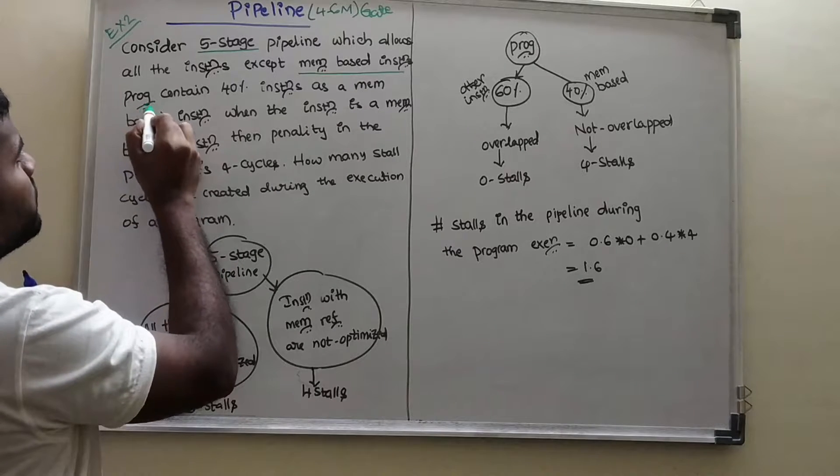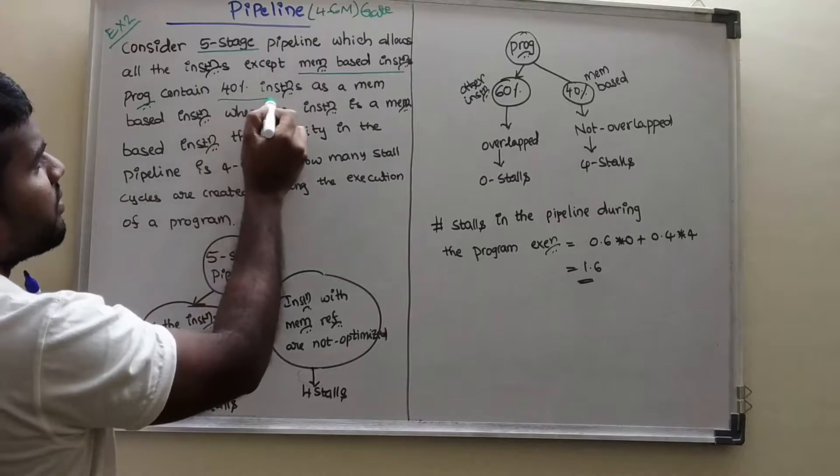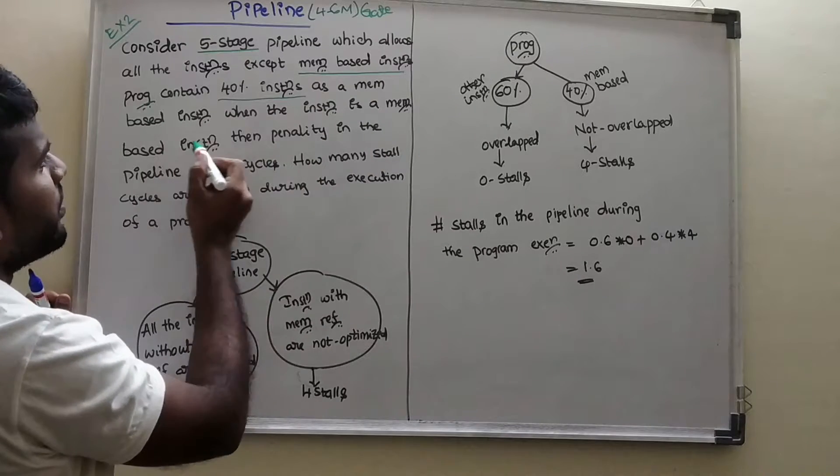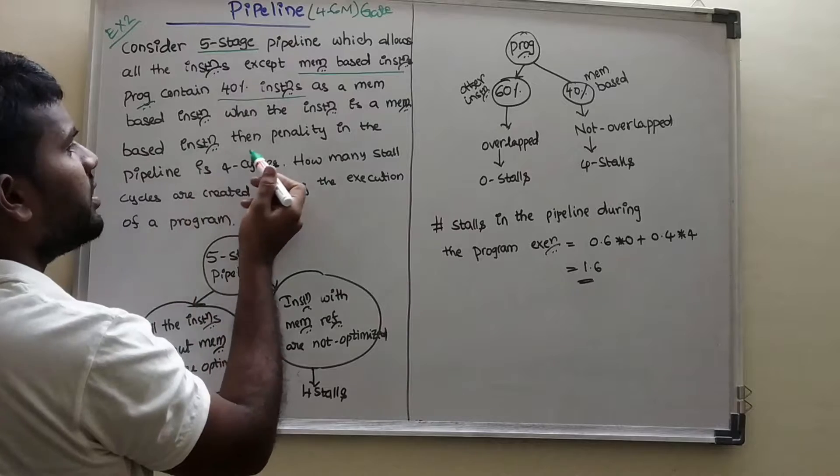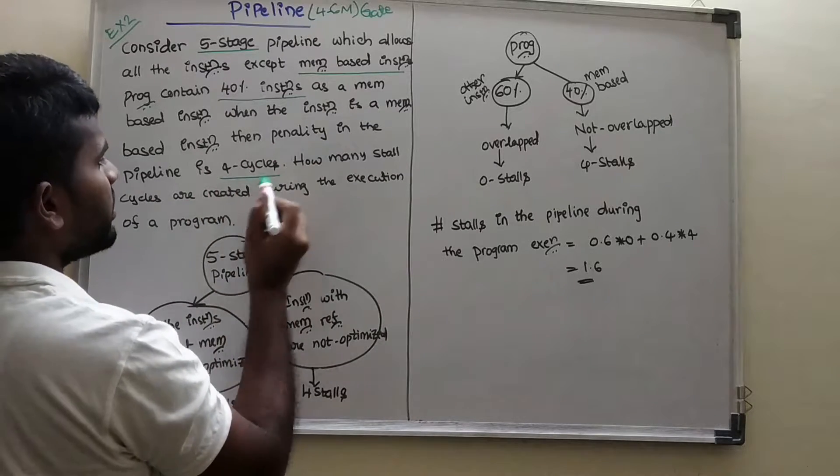Program contains 40% of the instructions as memory based. When the instruction is memory based instruction, then the penalty in the pipeline is 4 cycles.